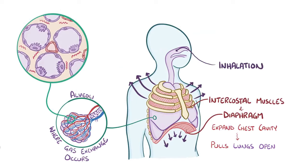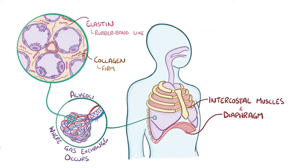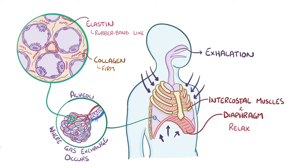Between the alveoli, there's connective tissue made up of proteins like elastin fibers, which give the lungs their rubber band-like properties, and collagen, which gives the lungs their firmness in overall shape. During exhalation, both the diaphragm and the intercostal muscles relax to allow the chest wall to fall and return the chest cavity back to normal. At the same time, the elastin and collagen fibers in the interstitium allow the lung to spring back and push the air back out.